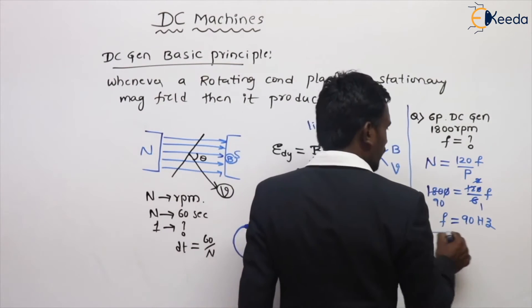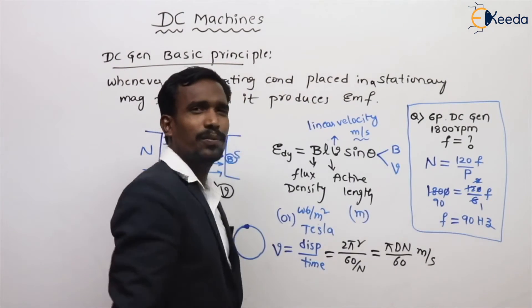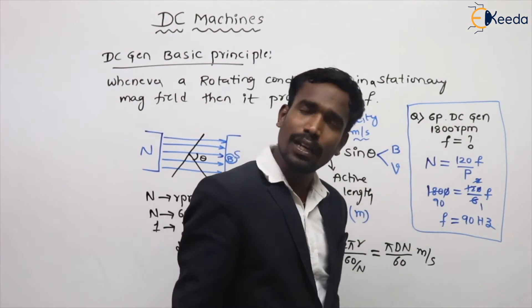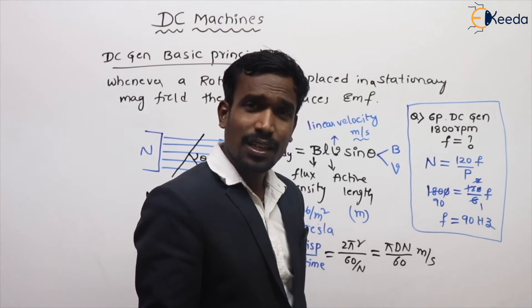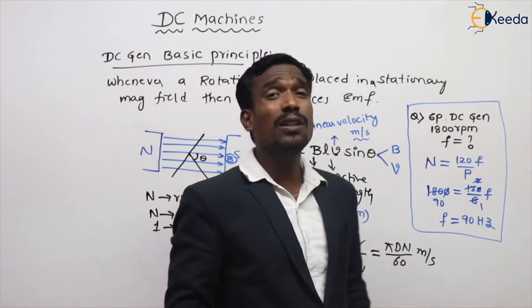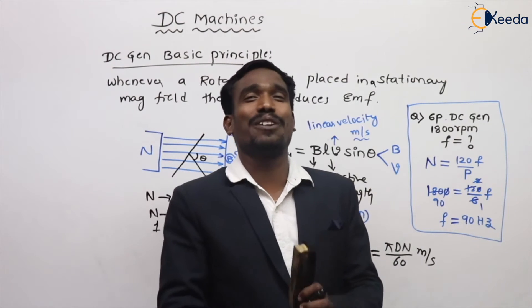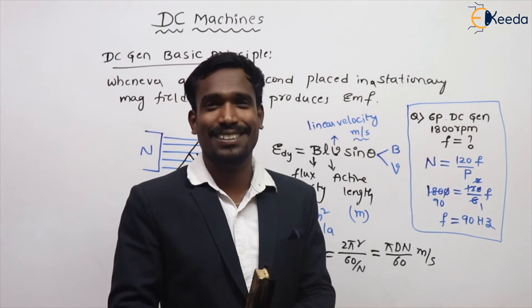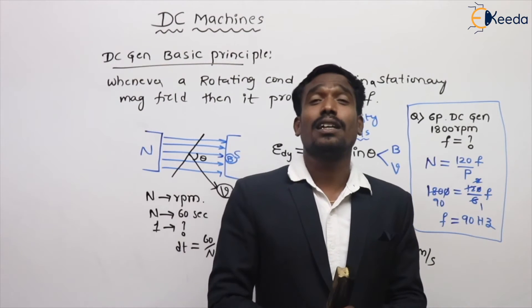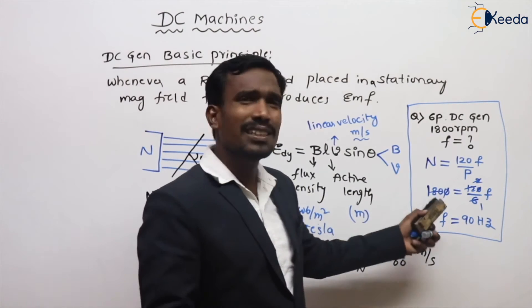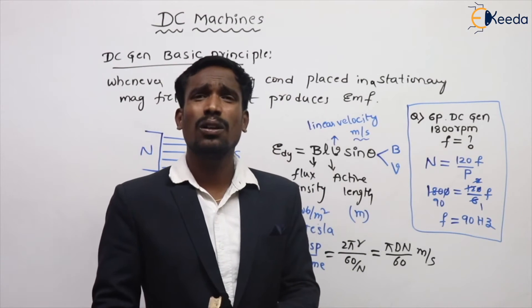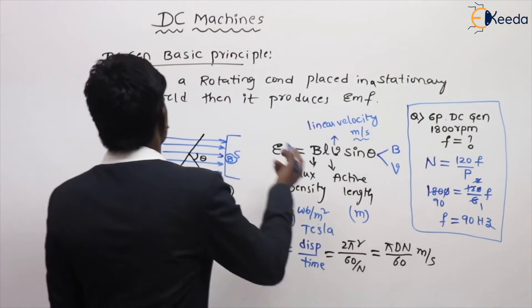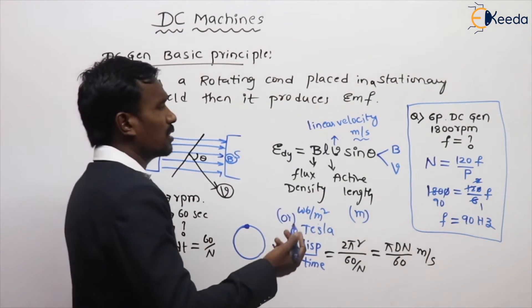N equals 120F by P is a well-known formula. Don't think that because it is a DC generator, there is no frequency. Even in a DC generator, the EMF induced in the armature winding is AC only — it must have a frequency. This is simply the DC machine's EMF equation. Up to now we've given the magnitude, which is given by Faraday's law.